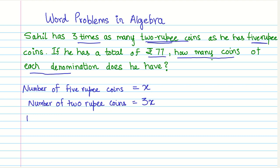So from five rupee coins, how much amount will he have? That will be equal to five times x or 5x, right, where x is the number of coins. So that is the amount that he has from five rupee coins.